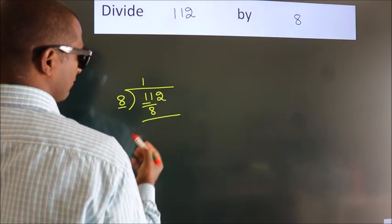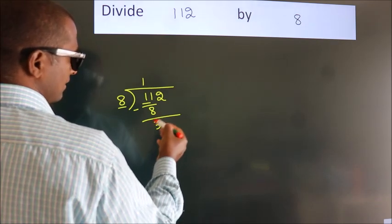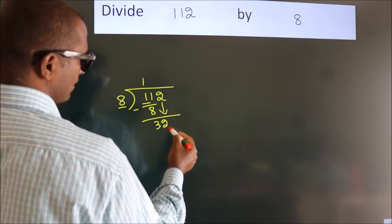Now we should subtract. We get 3. After this, bring down the next number. So 2 down, so 32.